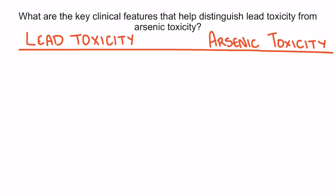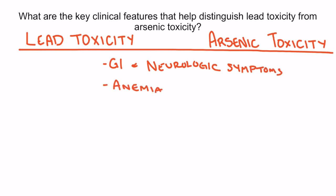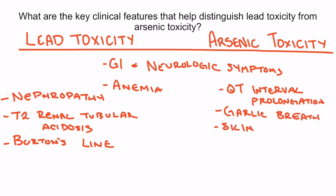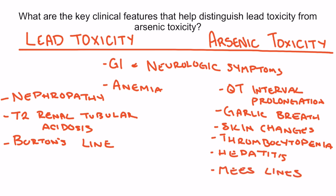The clinical features of lead and arsenic toxicity in adults are very similar and often confused on exams. Both can lead to GI symptoms, neurologic symptoms, and anemia. Lead toxicity specifically can lead to nephropathy, type 2 renal tubular acidosis, and Burton's line. Whereas arsenic toxicity can lead to QT interval prolongation, garlic breath, skin changes, thrombocytopenia, leukopenia, hepatitis, and Mees' lines. Knowing these key differences, along with key risk factors for each toxicity, will help you confidently distinguish lead poisoning from arsenic poisoning on the test.